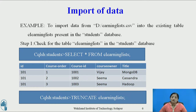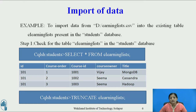To import data from source file elearninglist.csv on the D drive into the existing table elearninglist in the student's database: Step 1 — assuming the student's database and the table elearninglist have already been created, check for its existence using SELECT * FROM elearninglist. Now, if you want to clear the table before importing new data, use TRUNCATE elearninglist, which deletes all rows. If you don't want to delete earlier content and just update with new imported data, don't use the TRUNCATE command.